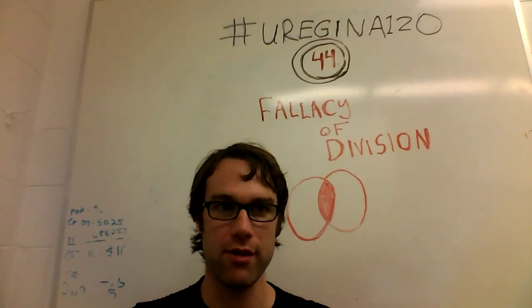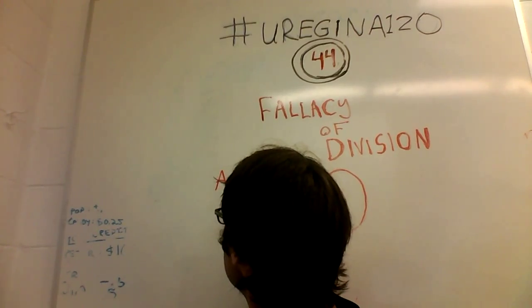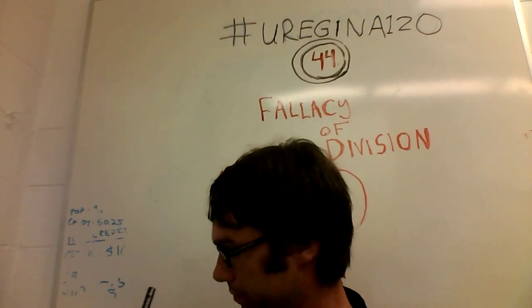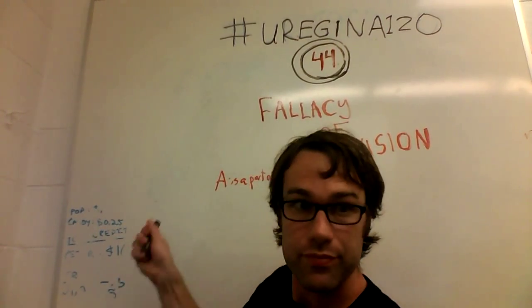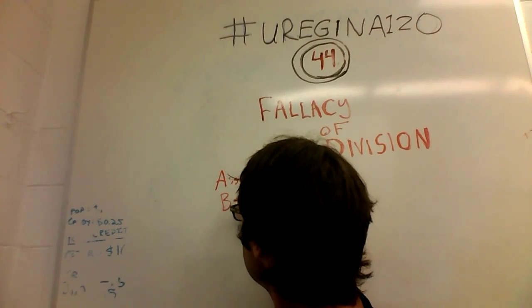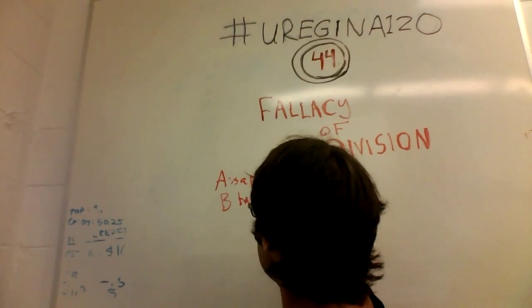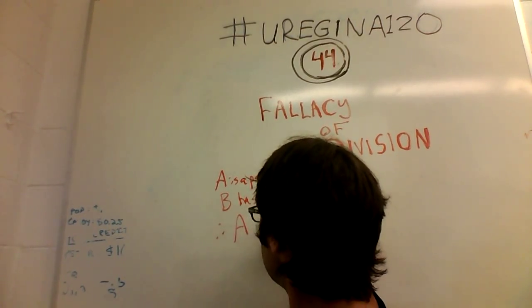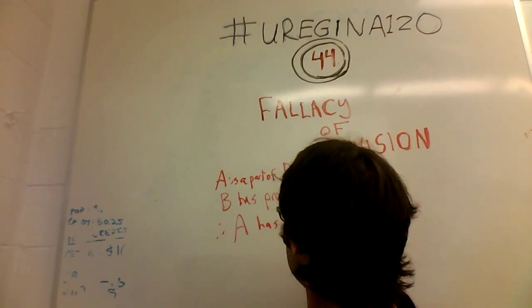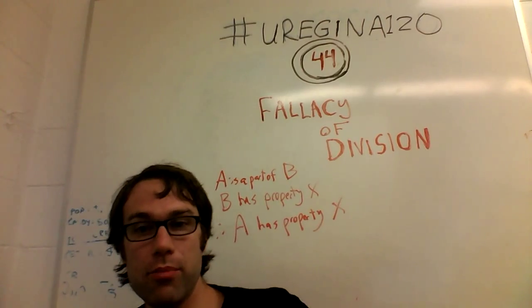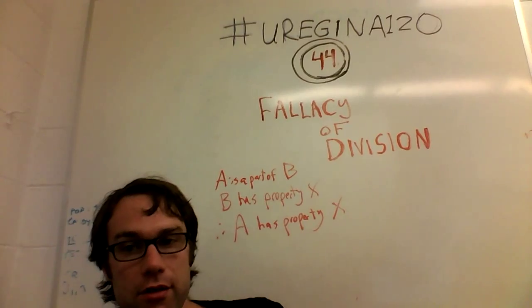The form of the fallacy is going to be something like this: A is a part of B. B has property X. Therefore, A has property X.